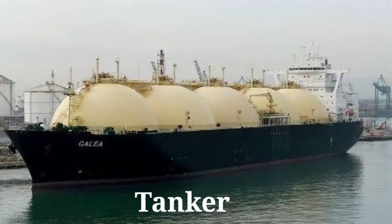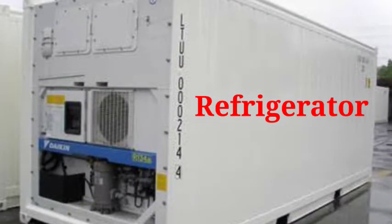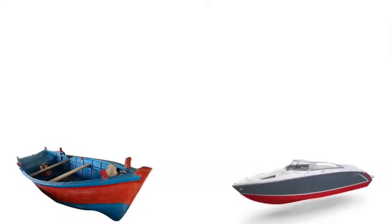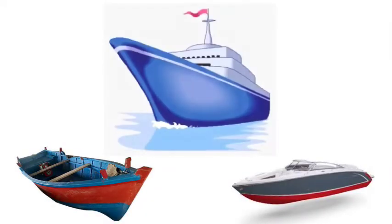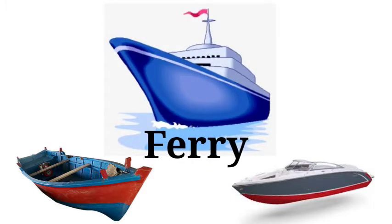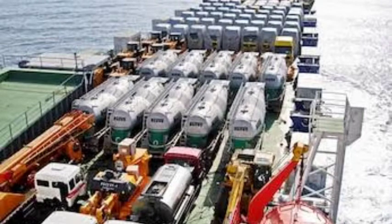Container ships carry goods packed in large metal boxes called containers. Tankers carry liquids such as oil. Ships that carry fruits, vegetables, meat, and fish have huge refrigerators to keep the food fresh. A boat, a launch (that is, a large motor boat), or a ship that carries people over short distances is called a ferry. Some ferries also carry goods, vehicles, and even trains.